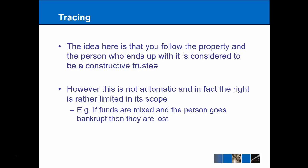Tracing is often considered quite difficult, but as long as we follow the basic rules it shouldn't be too hard. The key idea is that all you're trying to do is follow the property, and the person who ends up with that property is considered to be a constructive trustee. The property leaves the trust, ends up with someone else, and that someone else holds it on constructive trust so it can return to the original trust. However, tracing is not automatic — you need to identify whether tracing can actually occur. For example, if funds are mixed and the person who took the funds goes bankrupt, the funds are seen as having disappeared and tracing will not be possible.